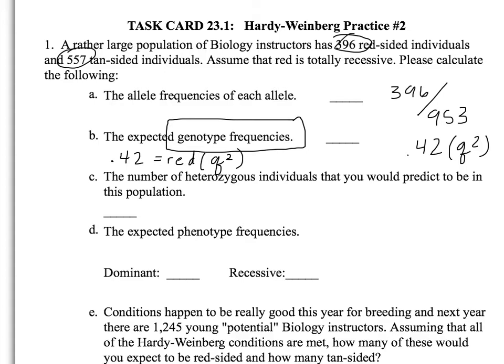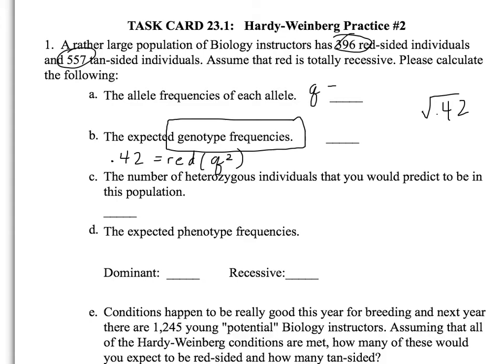The other one you can find is the frequency of the tan. Once you've got q squared you can find the q value. q equals the square root of 0.42, which equals 0.65. Since q is 0.65 and q plus p has to equal 1, that means p must equal 0.35. So those are the two allele frequencies.